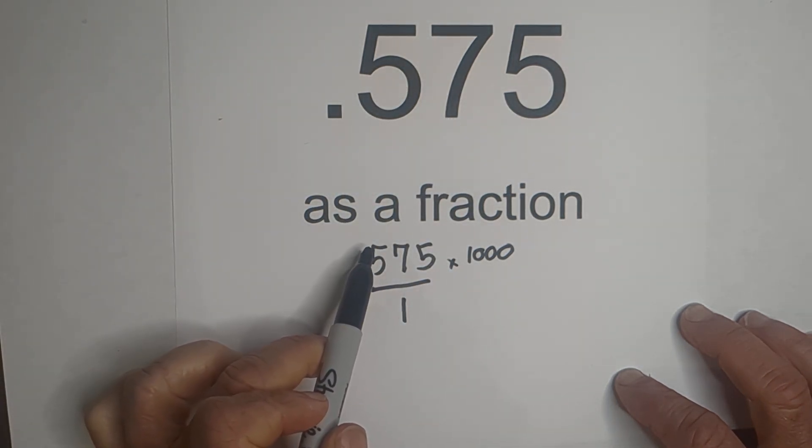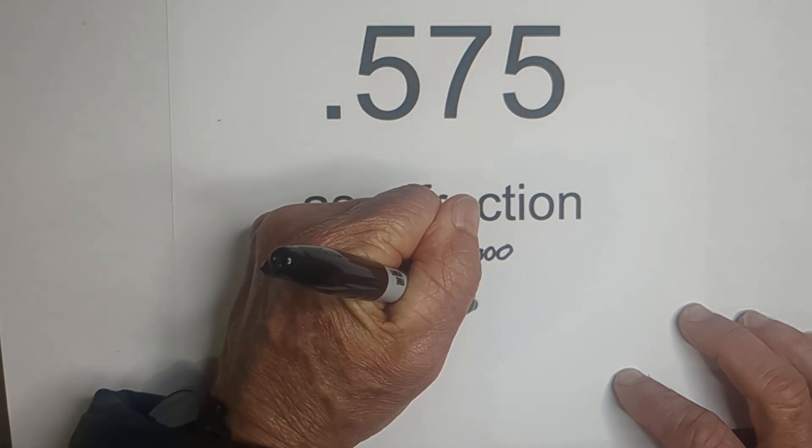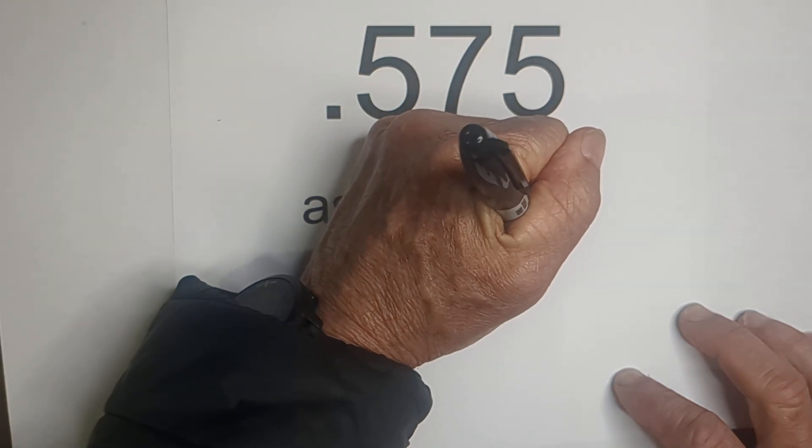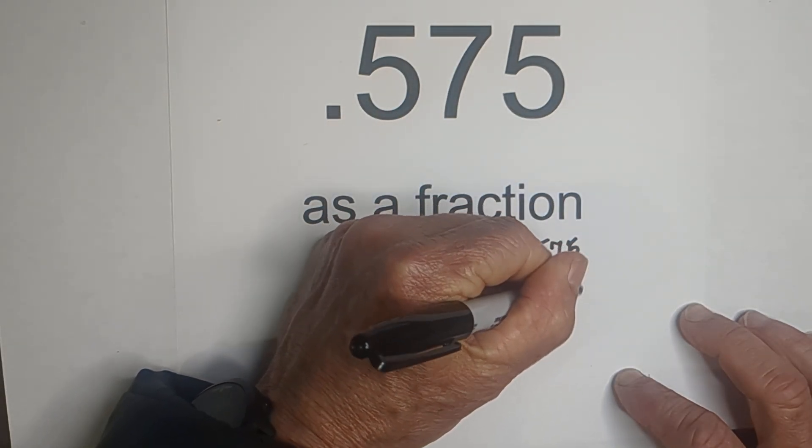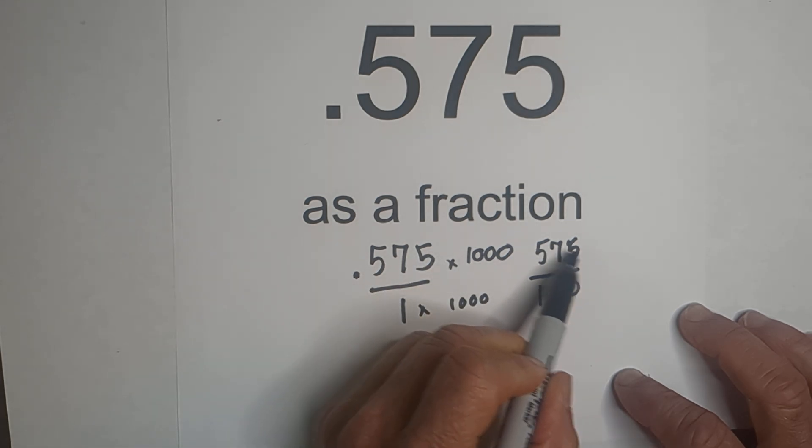And what I do to the top of the fraction, numerator of the fraction, I need to do to the denominator. So I'm going to multiply the bottom by 1,000. When that happens I get 575 over 1,000 because when I multiply it by 1,000 I move it one, two, three places.